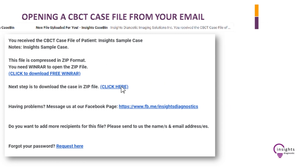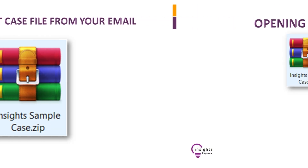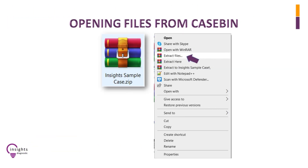In your Downloads folder, find the name of your patient's case — it will appear as a WinRAR icon. Unzip the file by right-clicking it, then click on Extract Files.